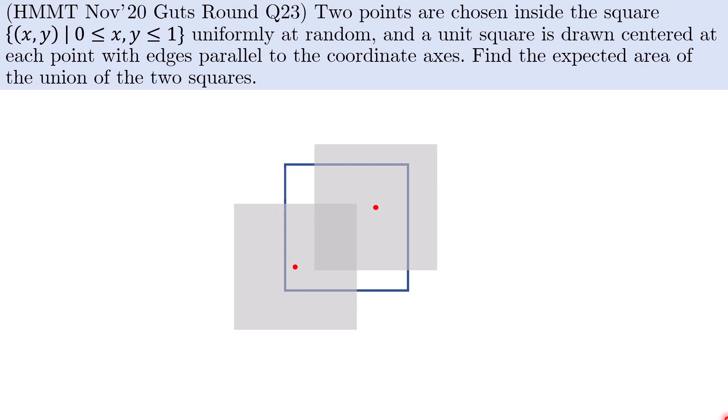This problem was taken from the Guts Round of the recent tournament in November 2020. The problem statement is as follows: Two points are chosen inside a unit square uniformly at random. The unit square is then drawn centered at each point with edges parallel to the coordinate axis. Find the expected area of the union of the two squares.